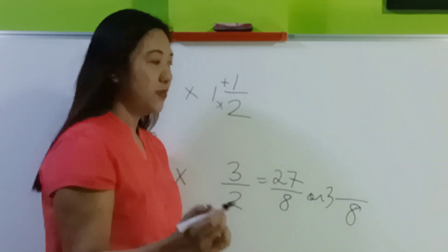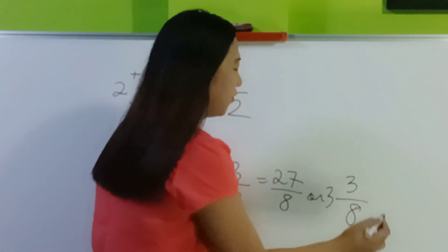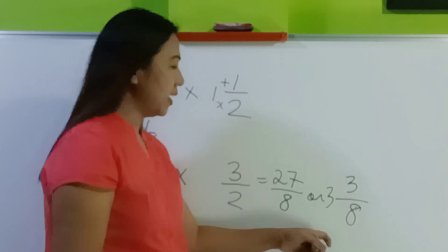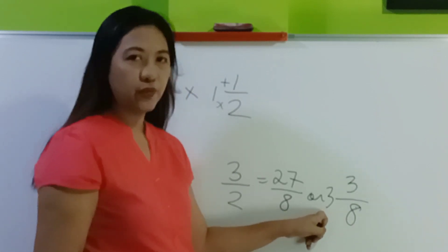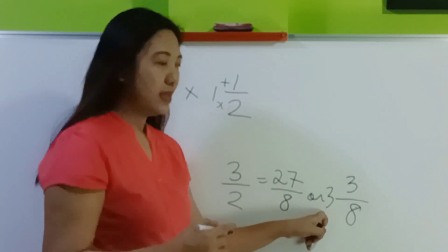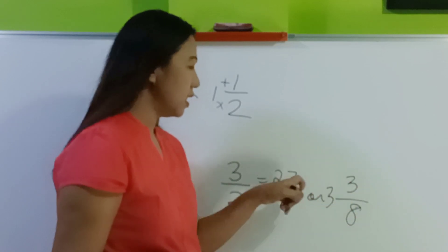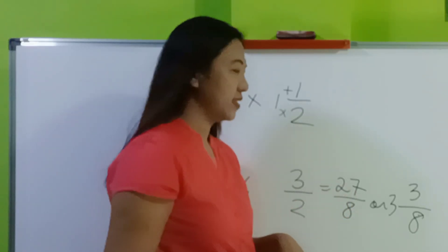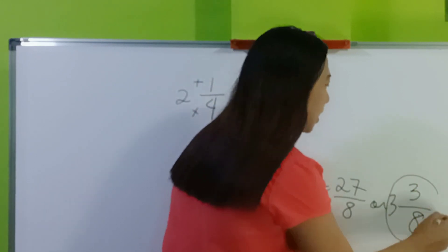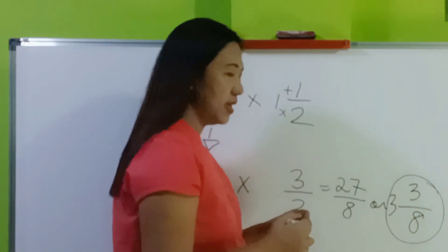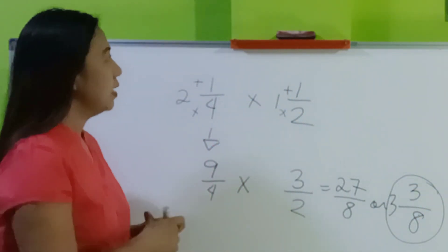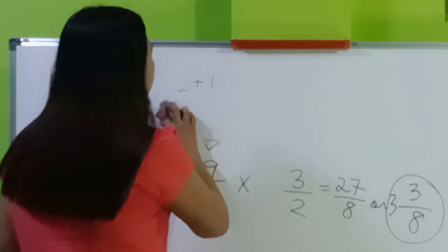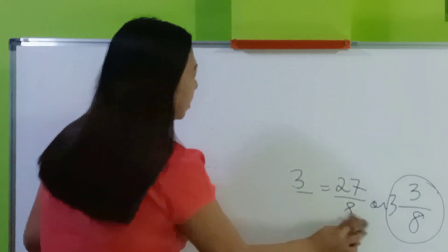How do you check if your answer is correct? Multiply 8 times 3 to get 24, then add the remainder of 3 to get 27. If you arrive at 27, your answer is correct. So the final answer is 3 and 3/8.